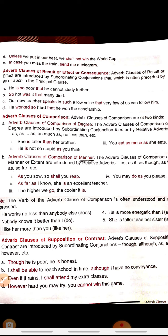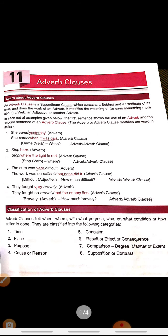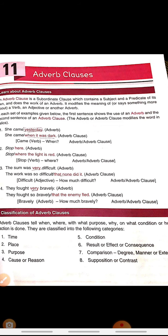With this, the chapter on adverb clauses is done. Let's take a quick recap. Adverb clauses are clauses which give meaning to a verb, an adjective, or another adverb — they perform the function of an adverb. There are eight types: adverb clause of time, place, purpose, reason, condition, result, comparison of degree or manner, and adverb clause of contrast.